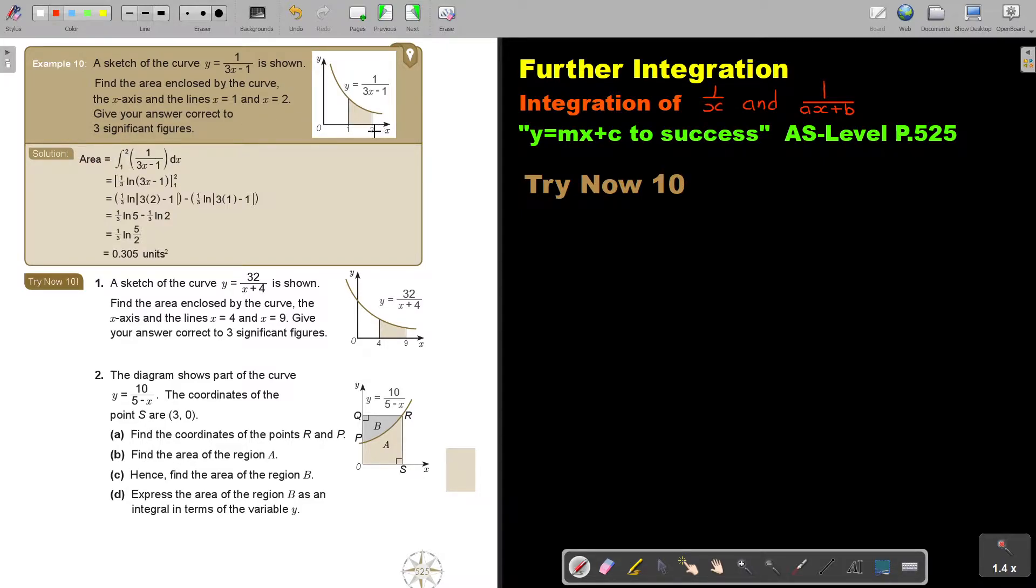To find the area, it's between 2 and 1, so that's why it's 2 and 1. And this I must integrate. And now I integrate. What is standing in front of x? It's 1 over 3. Then ln, then the bracket, then 2 and 1. And then I substitute 2 and then I substitute 1.